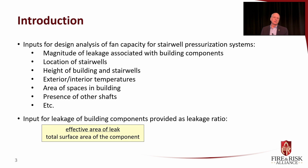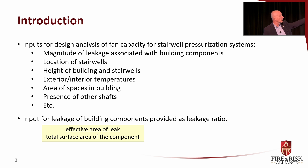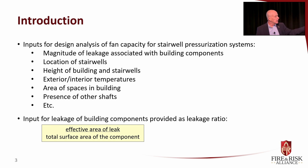One of the keys is the magnitude of leakage. The fan capacities we get for stair pressurization systems are pretty sensitive to the leakage characteristics of the building, as you might intuitively expect. The input for leakage of building components is provided as a leakage ratio — what's the effective area of the leak? We account for all the leaks of that exterior wall, including windows that are not airtight, and divide that area by the total surface area of that component to get a ratio: how leaky is that wall?